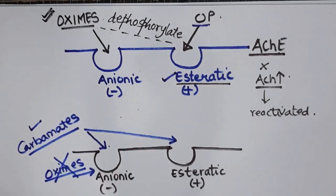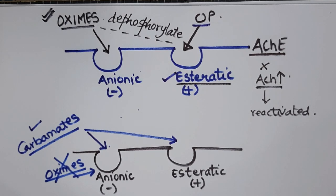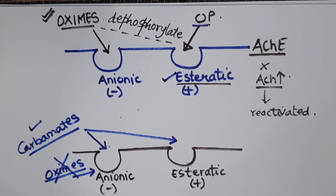In summary, in organophosphorus poisoning we use two specific drugs: atropine, to block all muscarinic side effects, and oximes, for regeneration of acetylcholinesterase and reversal of muscular paralysis. Thank you.